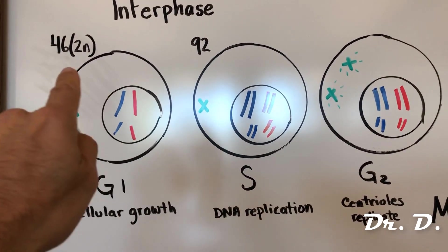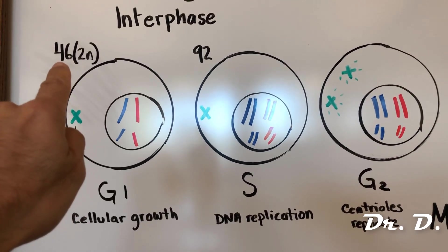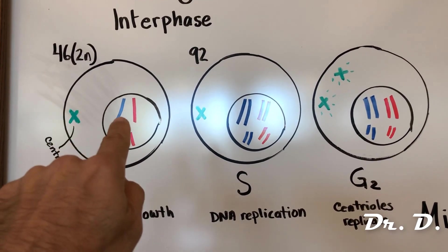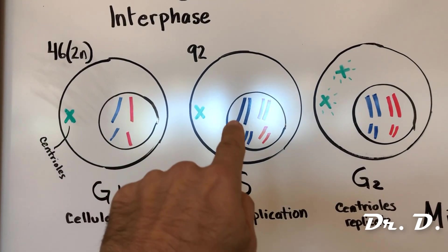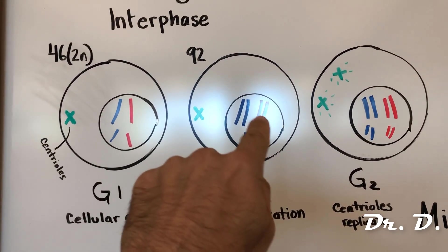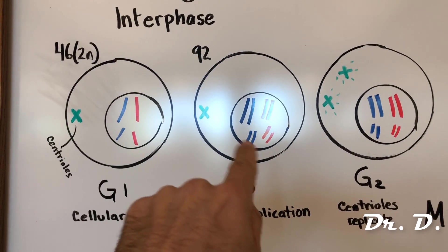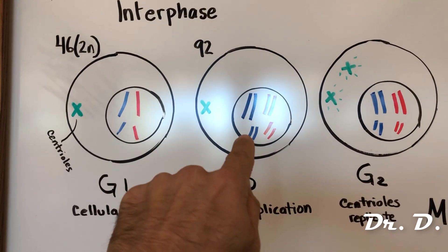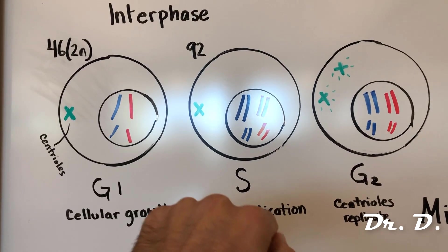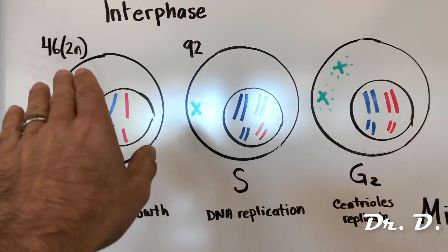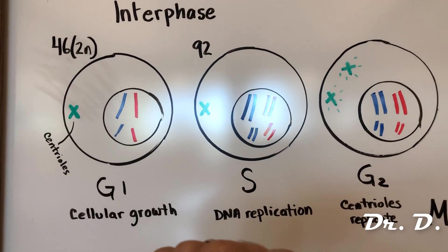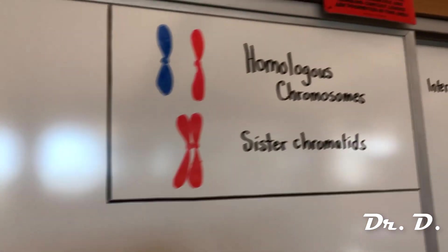In S phase, the cell copies each and every chromosome. You started with 46 chromosomes total in a human cell. You're going to copy each and every chromosome — two copies of chromosome 1 from dad, two copies of chromosome 1 from mom, two copies of chromosome 2 from mom — going from 46 chromosomes to 92.